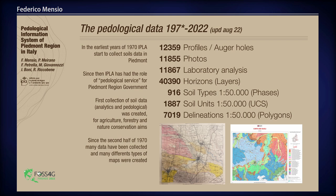Since the second half of the 1970s, many data have been collected and many different types of maps were created. Two examples of maps: on the left, a map from 1982 drawn by hand, and on the right a digital map. Some numbers from these 40 years of work: over 12,000 profiles or auger holes in the whole region, about 12,000 photos and laboratory analyses, more than 40,000 horizons described, and for the map at 1:50,000 scale, about 1,000 soil types described and about 1,900 soil units defined in 7,000 delineation soil polygons, because more than one delineation can belong to a single soil unit.